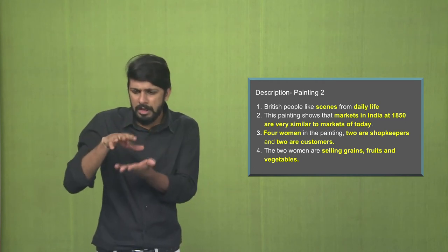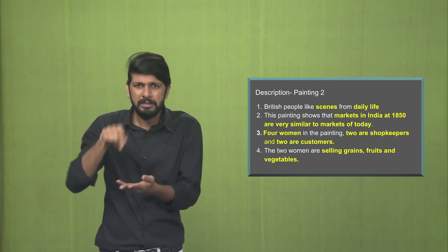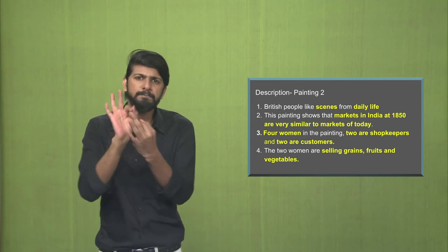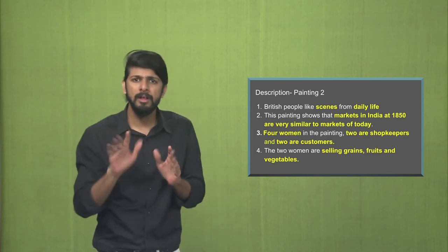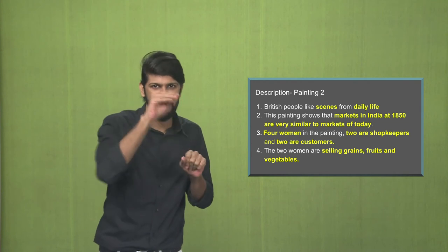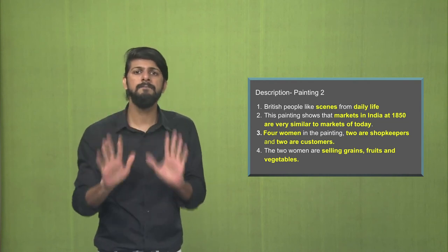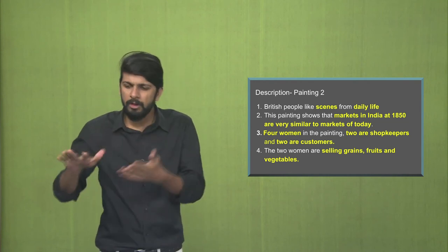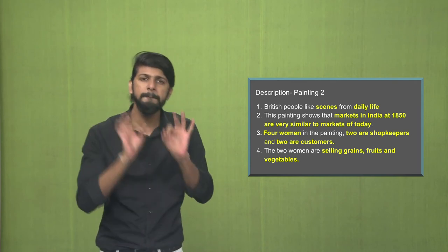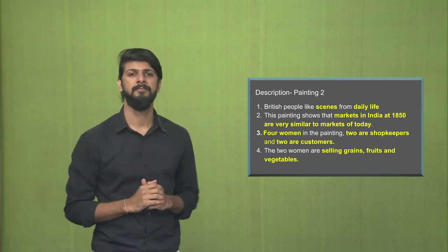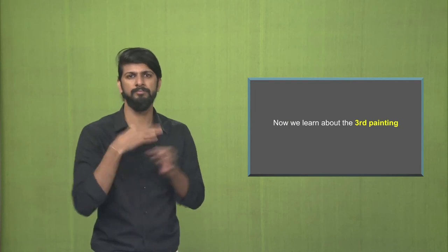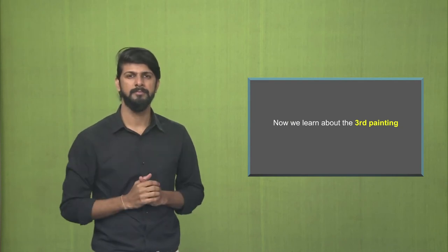The fruit, vegetables and grains have been very aptly depicted by naturalistic colours, which look like the real objects. For example, dal, pulses and all these grains have been very nicely depicted by natural colours. Now, we learn about the third painting.